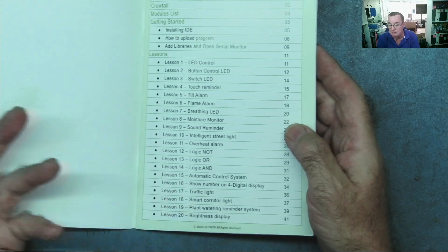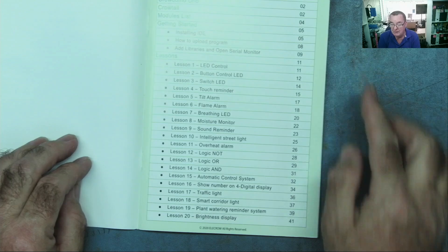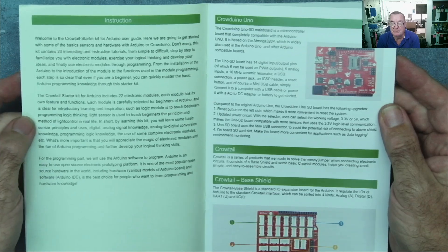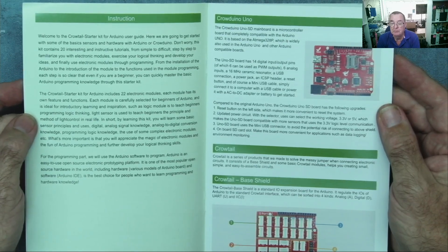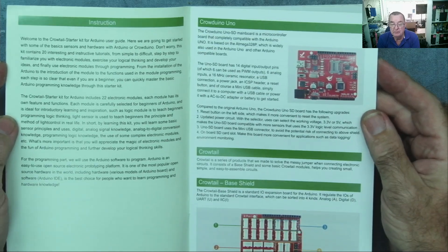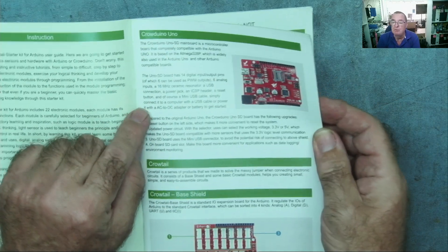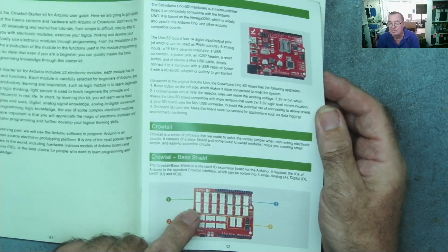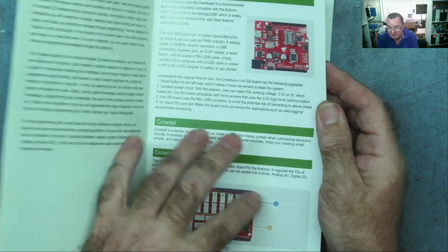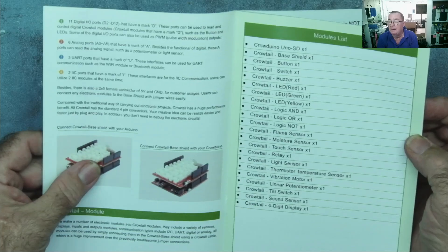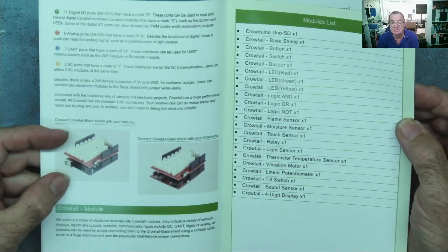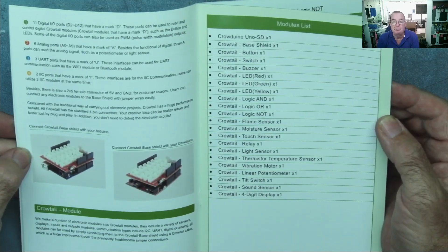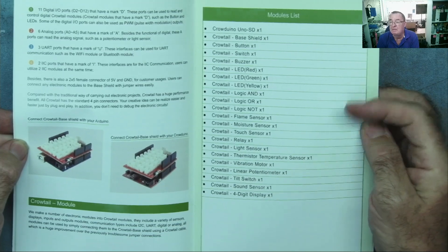Various other projects we can do. Logic gates here, understanding logic control system, and ending up with a plant watering reminder system and brightness display. This is explaining the scope of this kit, what it actually does, what we can do with it. A little bit about the microcontroller itself, the Crowduino, and about Crowtail, the series of products. This is the base shield, this is where we connect everything together. This all seems very much aimed at the beginner to me, which is what this is supposed to be.